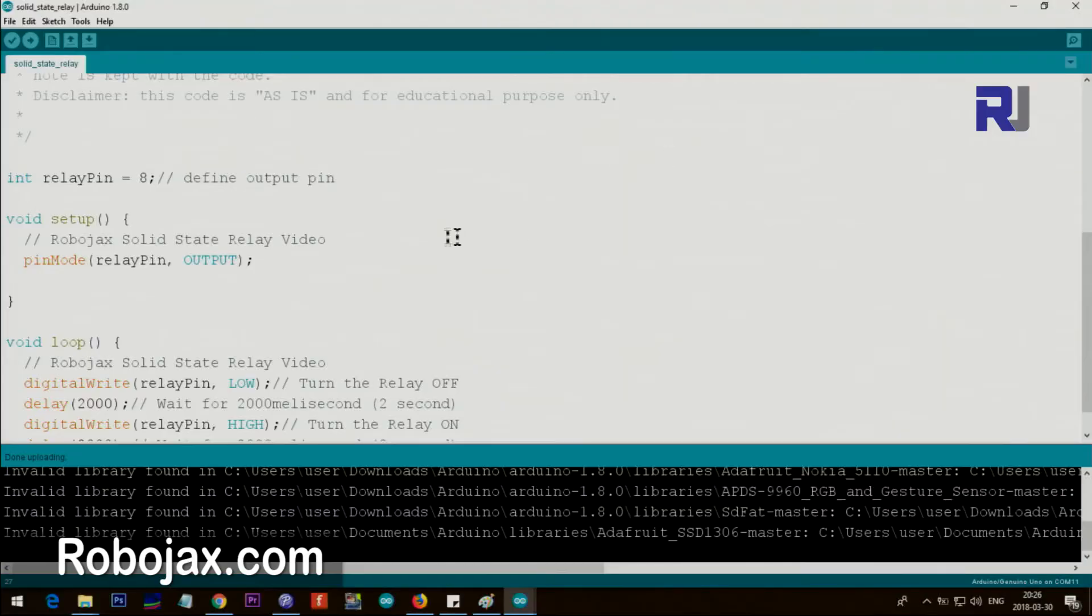Let me explain the code here. I've defined pin 8 as the relay pin, and then we use that. Inside the setup function, which starts from here to here, we have only one line that does something, and that is we set pin 8, or relay pin, as an output. That's what we do.